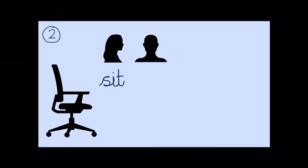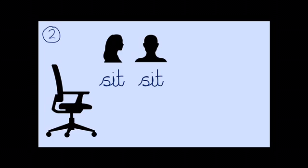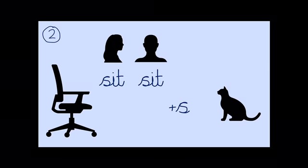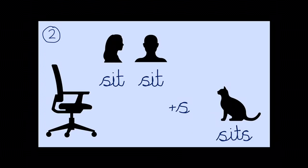The second reason is all to do with actions. If I was to sit on that chair, I would say, I sit. If you were to sit on that chair, I would say, you sit. But if I was talking about my cat, then I would say, he sits. And I would need to add suffix s. Sits.